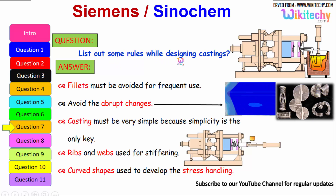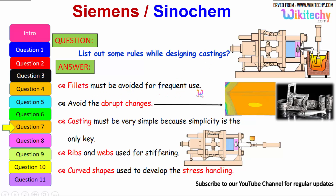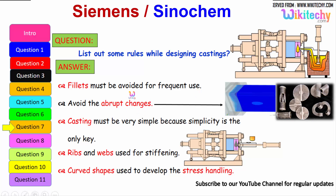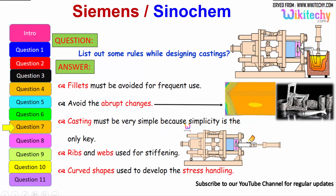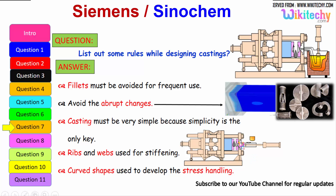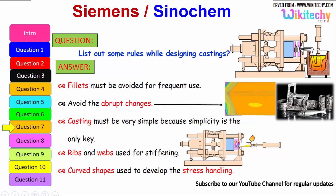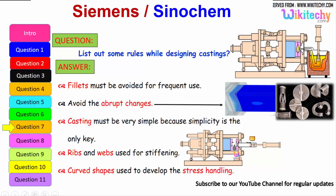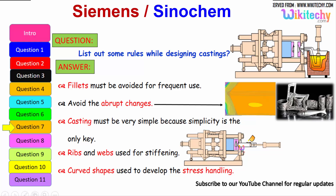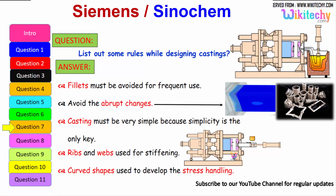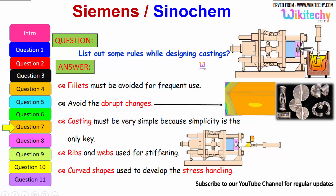Let us see some of the rules to follow while designing castings. Fillets must be avoided for frequent stress concentrations. Avoid abrupt changes in section. Casting must be kept very simple, because simplicity is key. Ribs and webs are used for stiffening. Curved shapes should be used to develop stress handling ability.